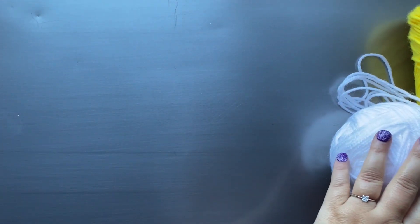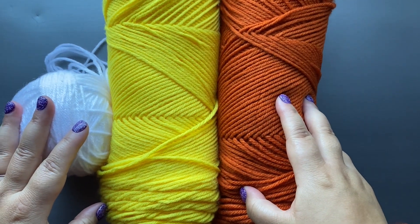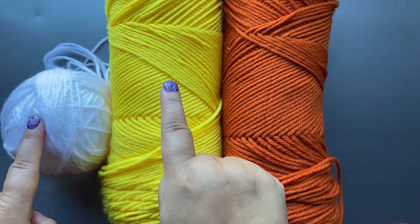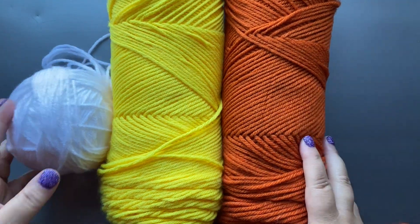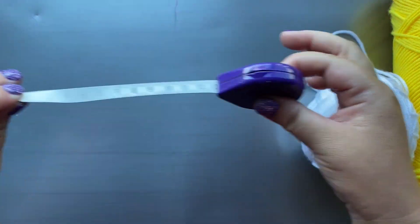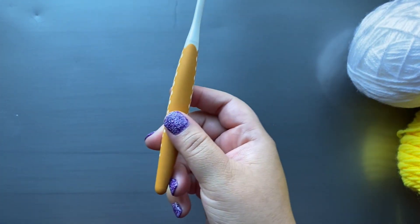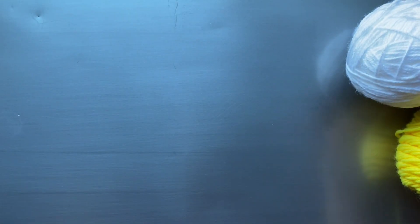Before we get started, we're going to need a few things. Medium weight yarn in white, yellow, and orange. A tape measure, a crochet hook, a yarn needle, and scissors.